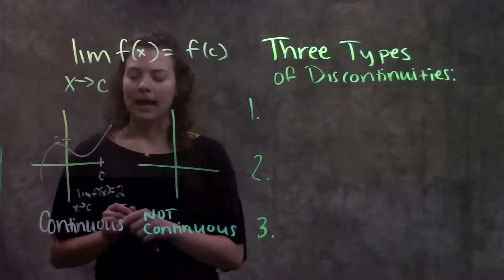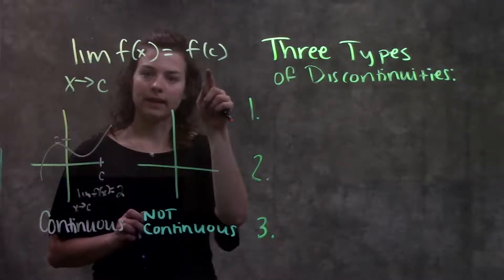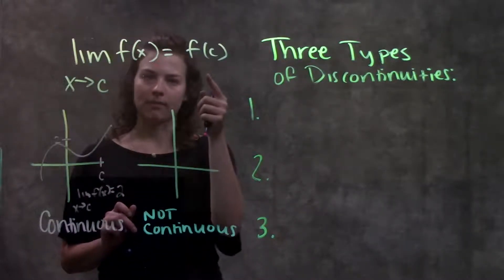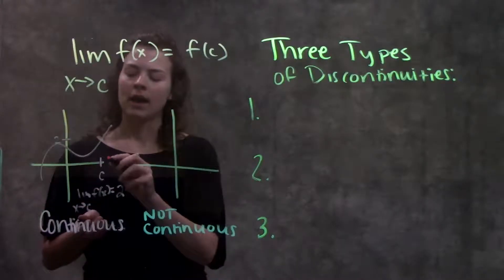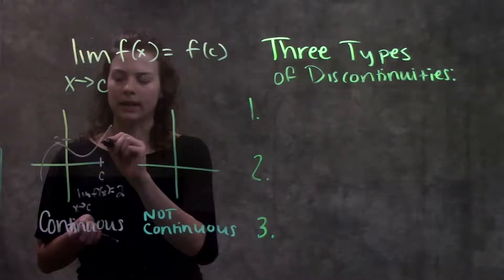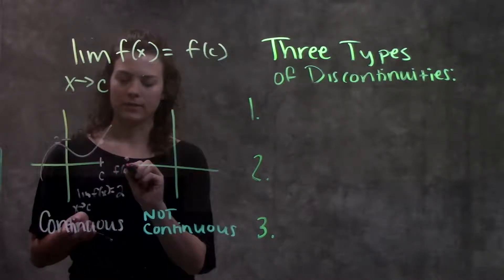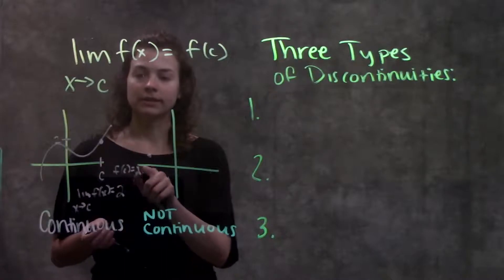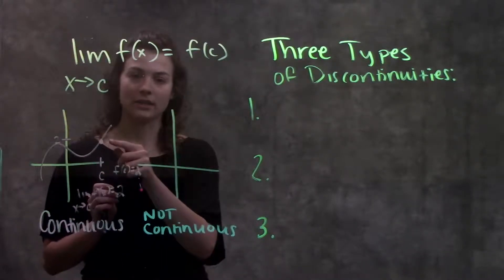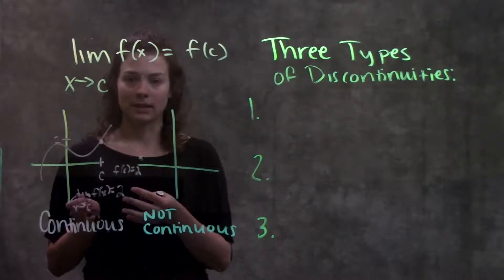If this limit is equal to whatever the function is defined at at that same x value, then the function is continuous. So for the second part — what is the function actually defined at x equals c? If we plug in c, we get the value 2. So f(c) is equal to 2. Since the limit and the value the function is defined at are the same, this function is continuous.